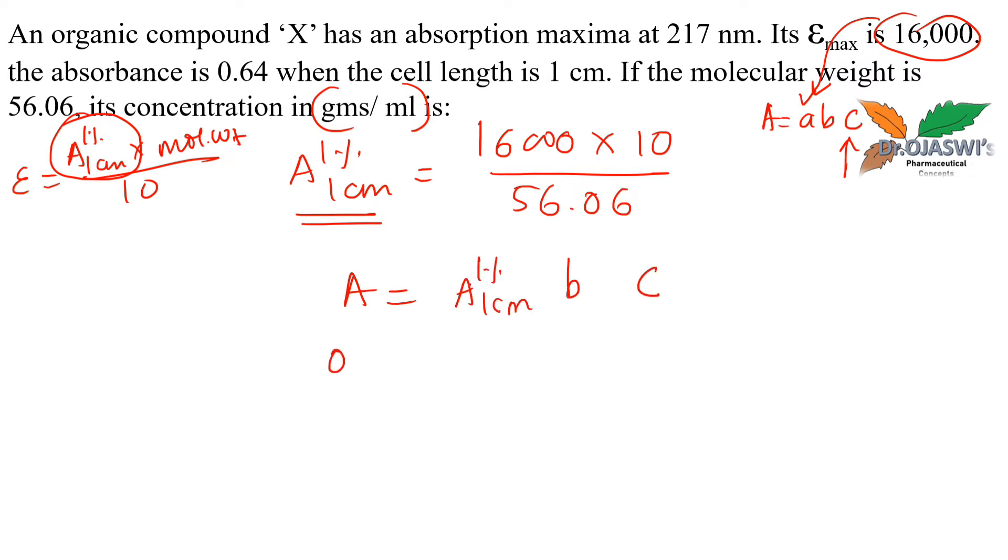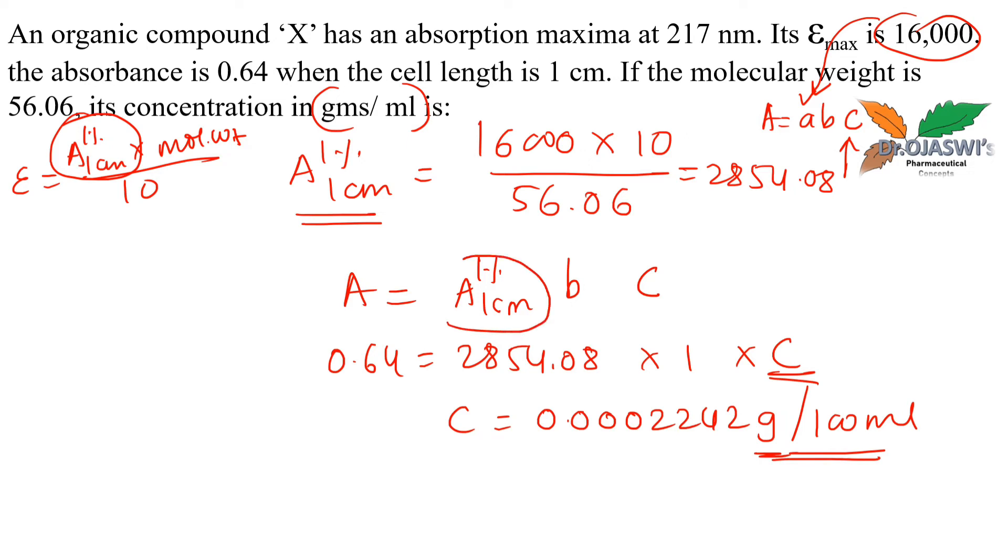Using A equals abc: 0.64 equals 2854.08 times 1 times c. Calculating c, I get 0.00002242 grams per 100 ml. This unit is grams per 100 ml because I used specific absorbance.